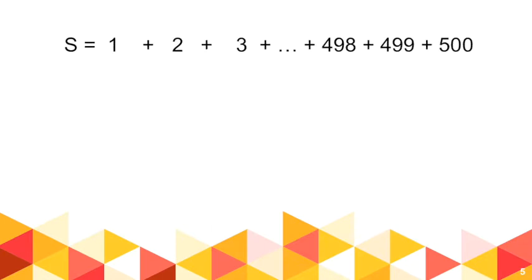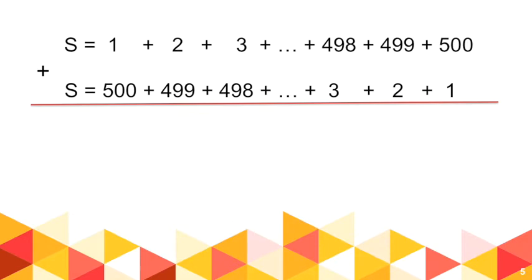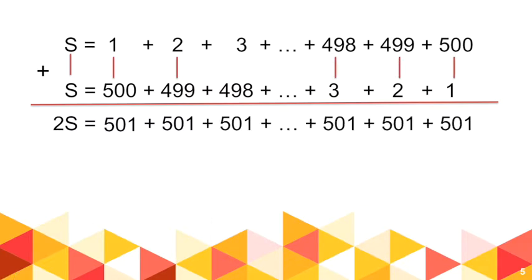He wrote it this way: S is equal to 1 plus 2 plus 3 plus up to 500. And then he also wrote it in reverse: S is equal to 500 plus 499 plus 498 up to 1. The next thing he did was add these two equations. The result is S plus S equals 2S. And then 1 plus 500 is 501, 2 plus 499 is also 501, 3 plus 498 is also 501, up to 500 plus 1 equals 501. So how many 501s are there in all?